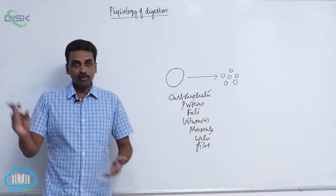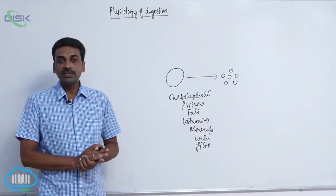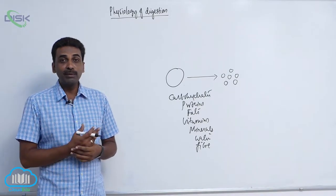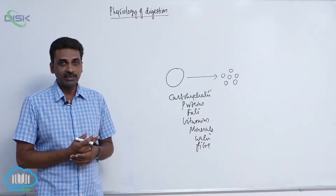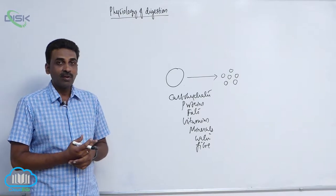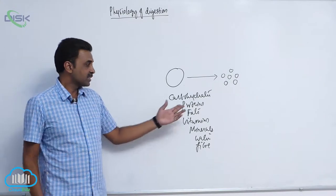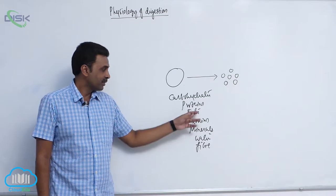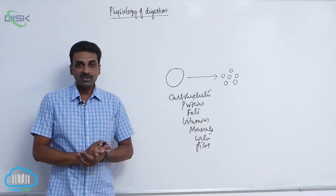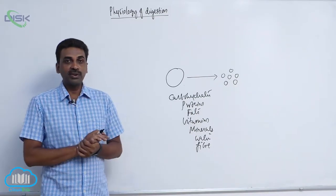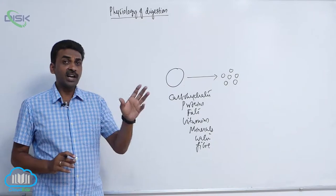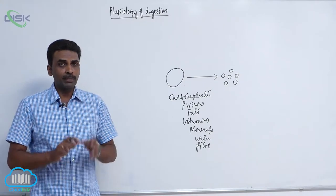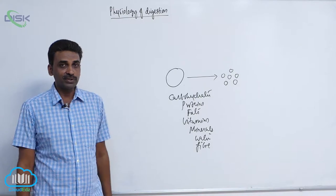Proteins are needed for the formation of antibodies, which are useful in the immune system. All antibodies are synthesized from proteins. Fats are reserved food; under certain conditions they are oxidized to produce energy, but basically fat is a reserve food.